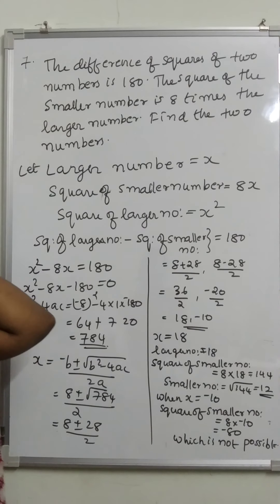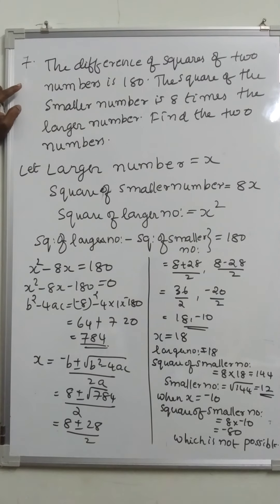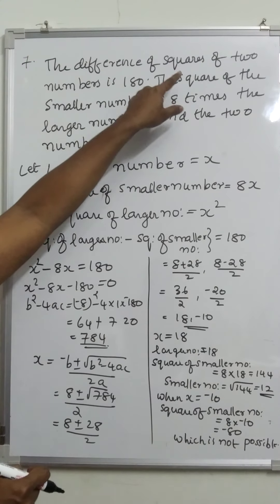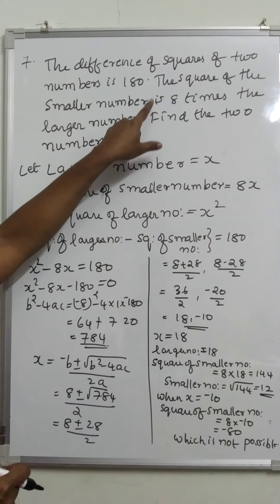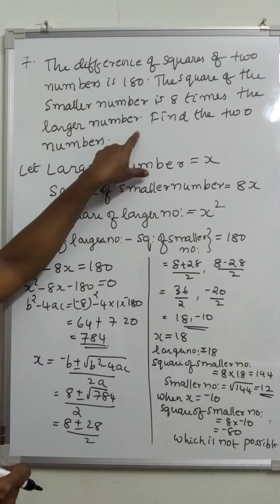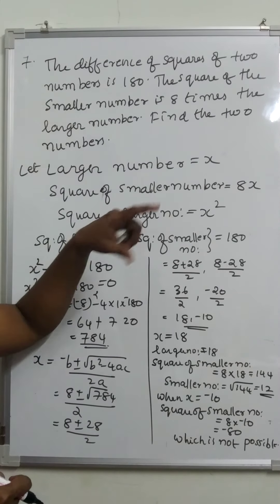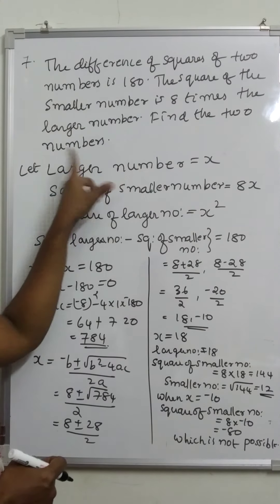The sixth question is a homework for you. Move on to the seventh question. The difference of the squares of two numbers is 180. The square of the smaller number is eight times the larger number. Find the two numbers.